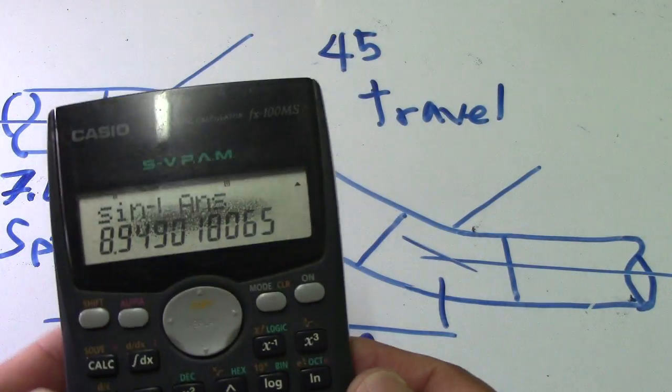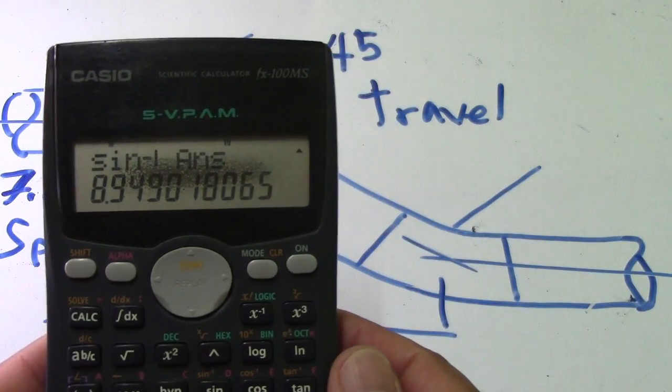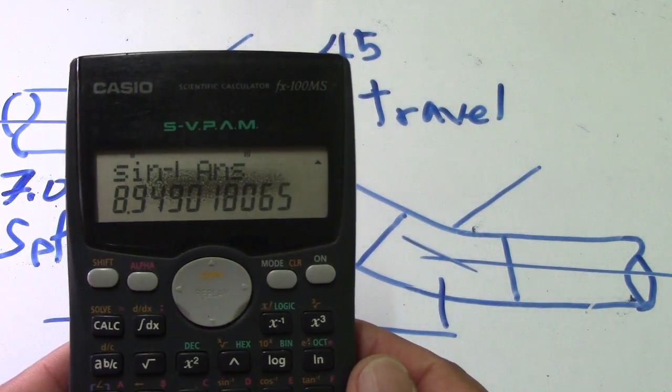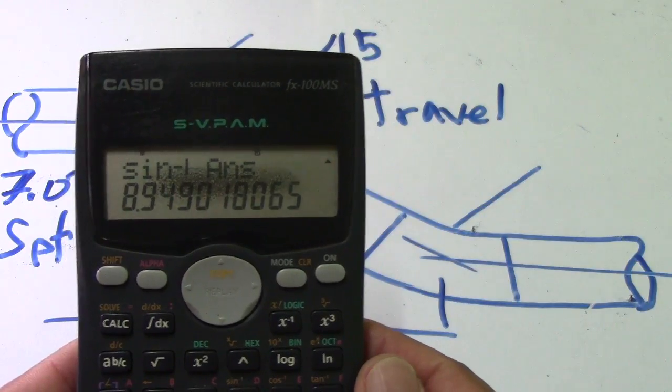This is correct - our answer is 8.9, which is 9 degrees. This is how to compute and check if your answer is correct.